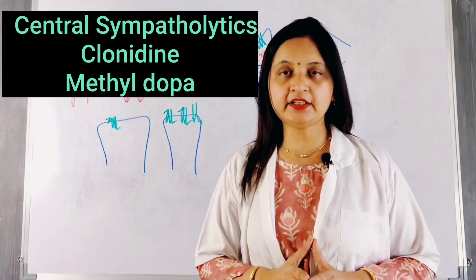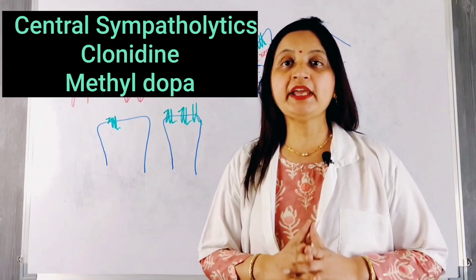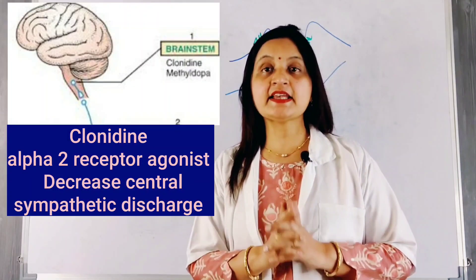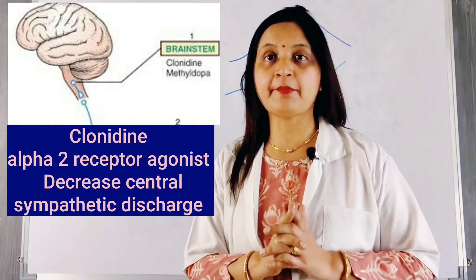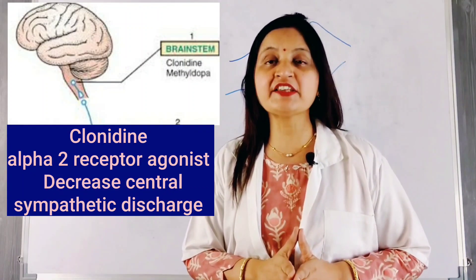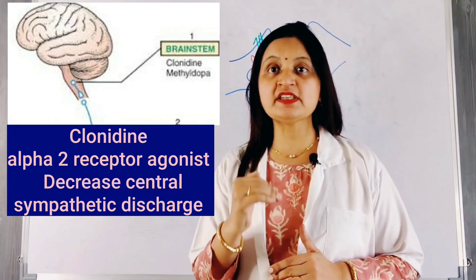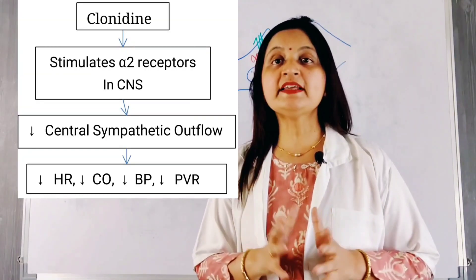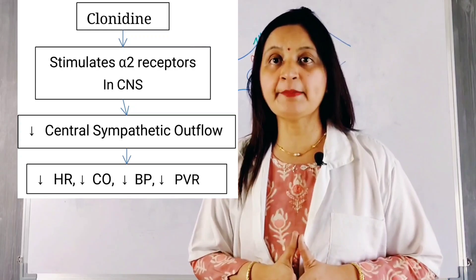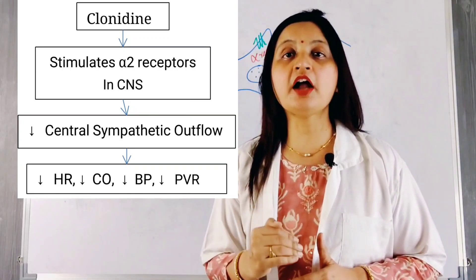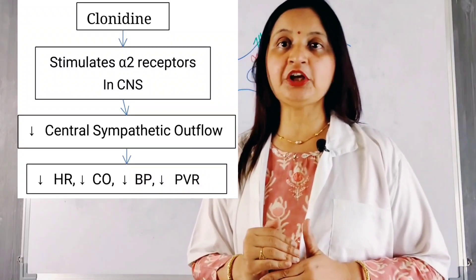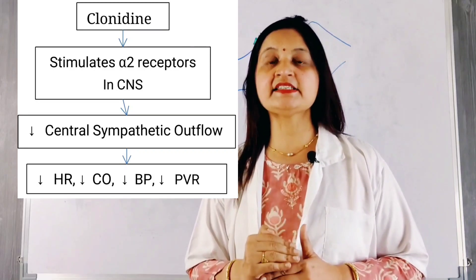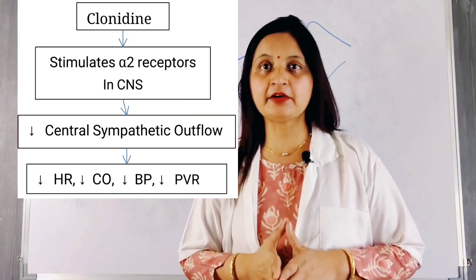Starting with central sympatholytic drugs, for example clonidine — its primary action is in the brain or central nervous system. It acts as an agonist on alpha-2 receptors present in the brainstem and vasomotor center, decreasing the central sympathetic discharge, decreasing the release of epinephrine and norepinephrine. This leads to a reduction in heart rate, reduction in contractility, decreased cardiac output, and decreased peripheral vascular resistance, thereby lowering blood pressure.